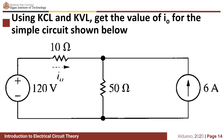Using KCL and KVL, get the value of I0 for the simple circuit shown below. Looking at the circuit, it is composed of four basic elements: two active elements — a voltage source and a current source — and two passive elements, the 10 ohm and 50 ohm resistors.